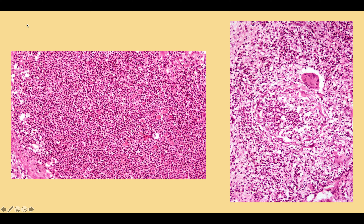This is a higher power view of the same case, in which on the left you can see abscess formation with scattered giant cells, and on the right there is a well-formed granuloma with multinucleate giant cells.